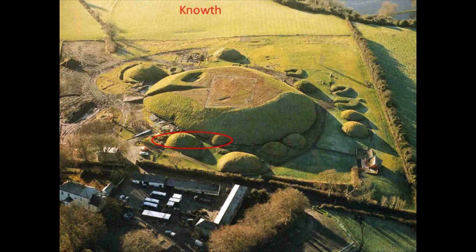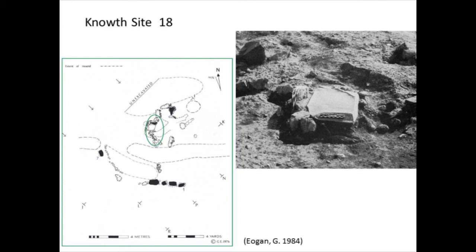I'd like to expand that argument by looking at two small sites at Knowth. This is site 18 — very little of the site is left, but in the surviving part of what would have been a chamber of a small passage tomb, a spall from greywacke has been used to cover the cremation deposit. There is a deliberate referencing and appreciation of this material, even though in another context we would see it as just a spall of greywacke.